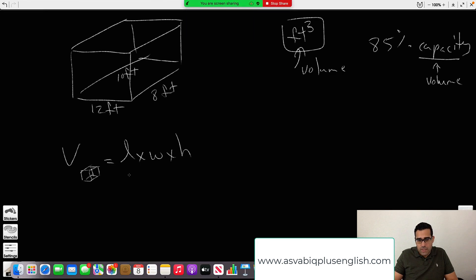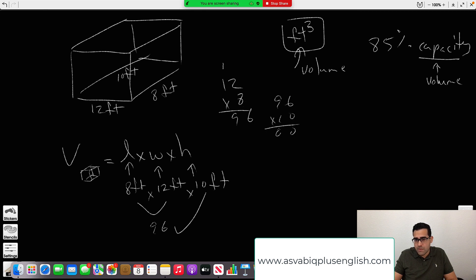Length was 8 feet, width 12, height 10. We multiply that with the formula: 8 times 12. 8 times 2 is 16, carry the 1. 8 times 1 is 8, plus 1 is 9. Times 10: 0 times 6 is 0, 0 times 9 is 0, space, 1 times 6 is 6, 1 times 9 is 9. You add it up, you get 960 cubic feet.